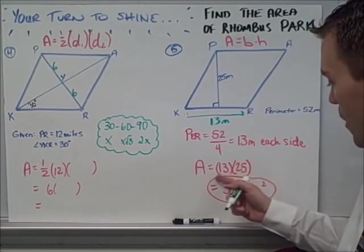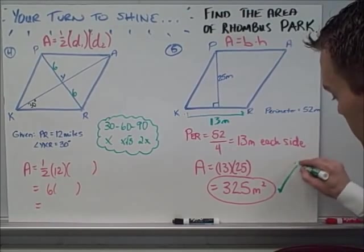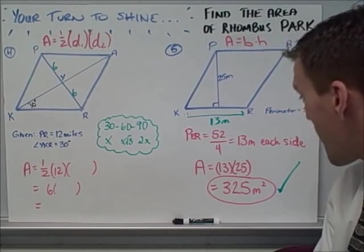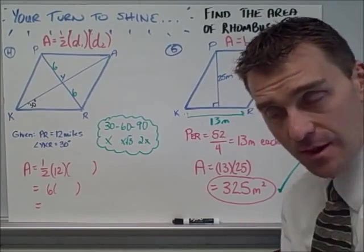The height was 25. Plug those numbers in and multiply it and check. We're all good to go. So that was 325 meters squared. There's that.